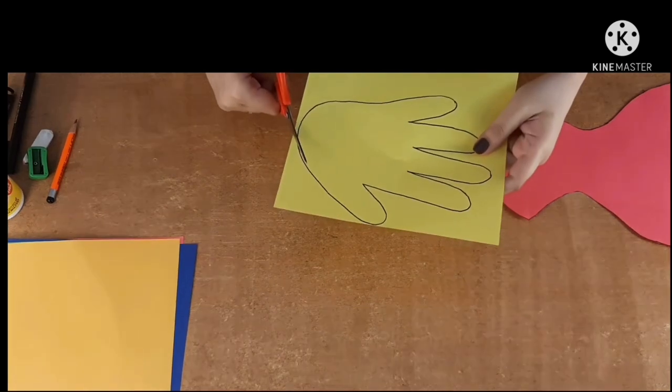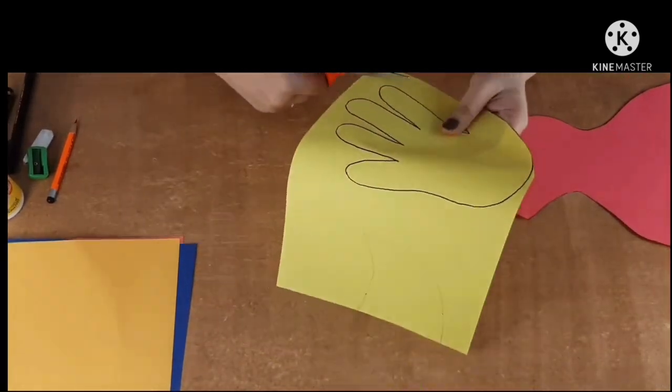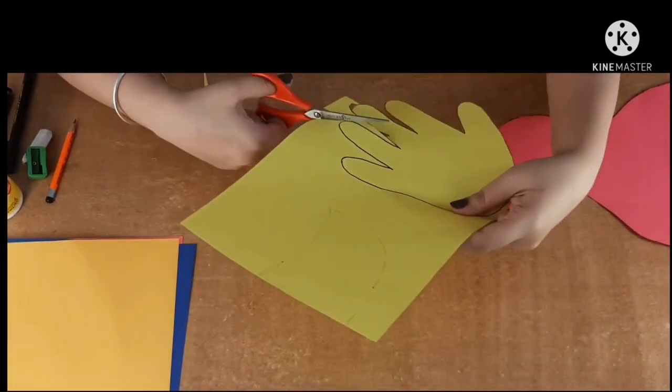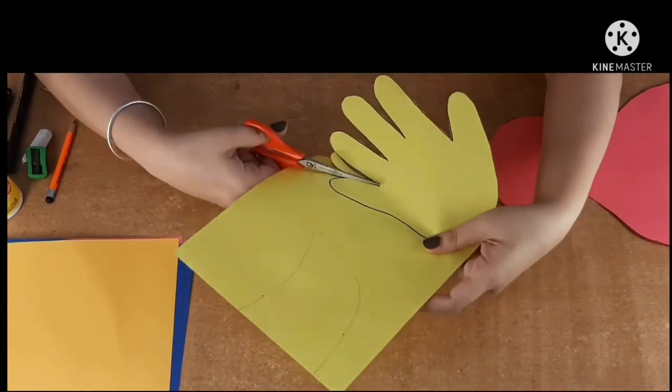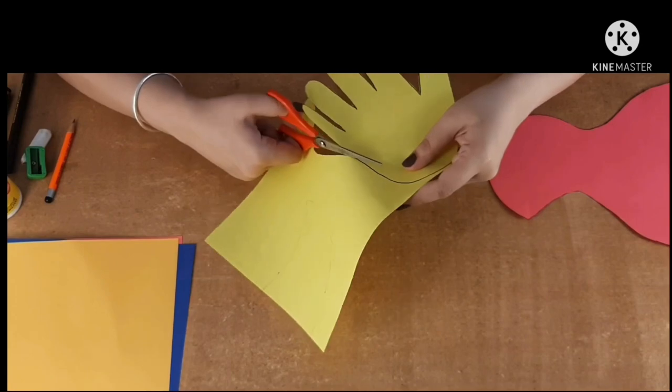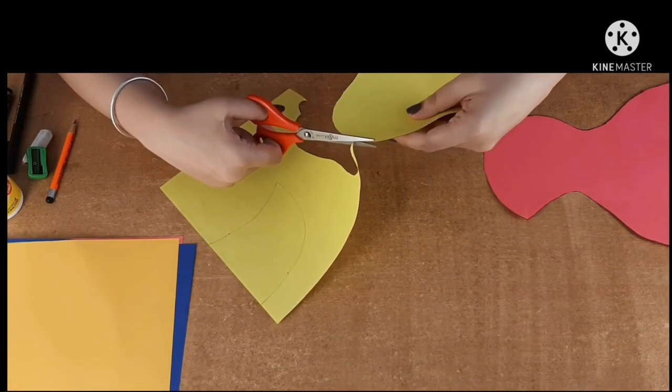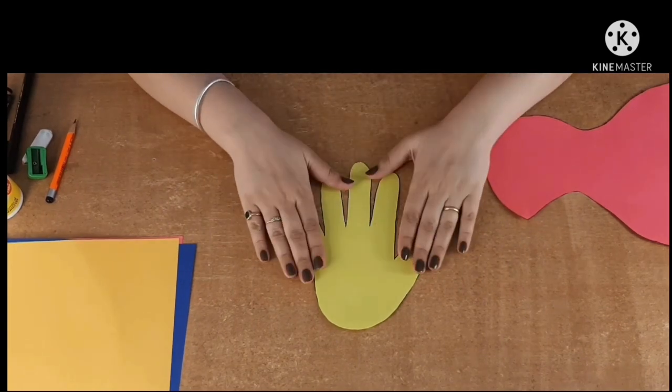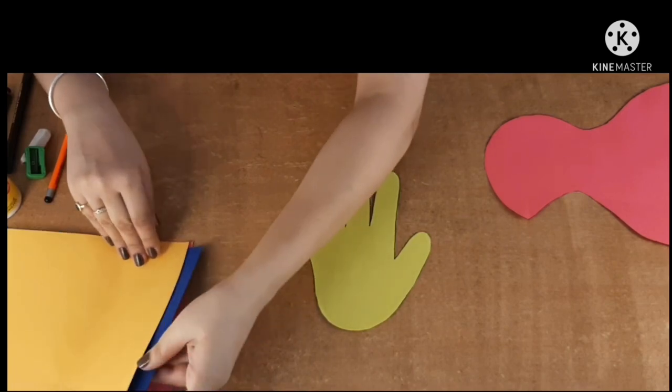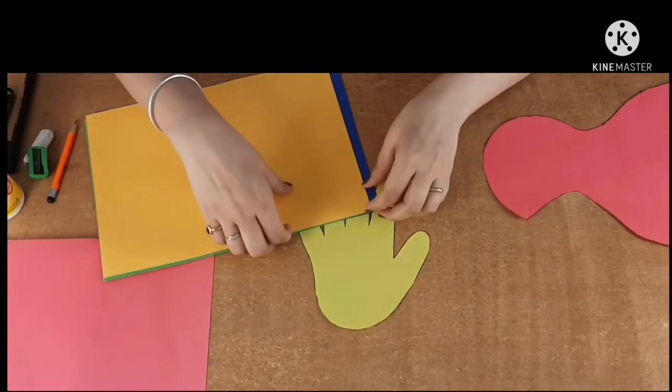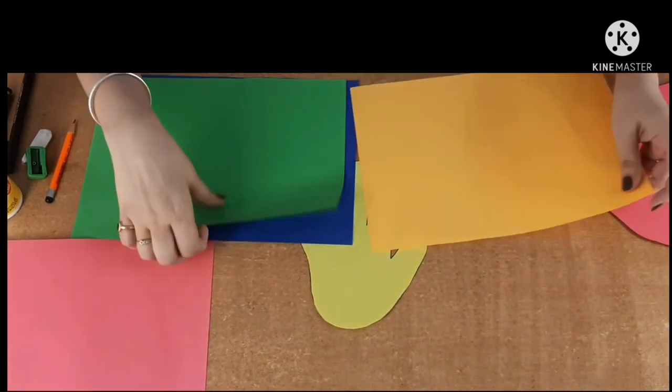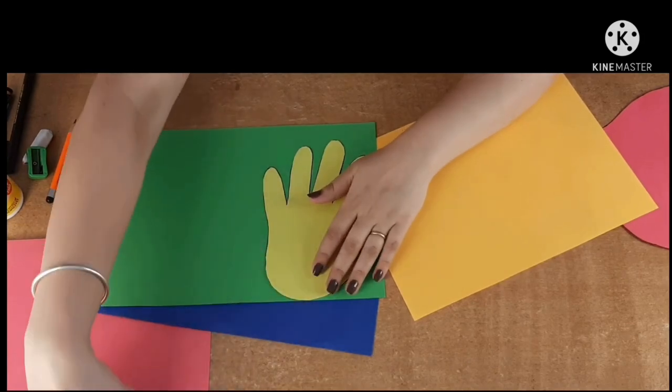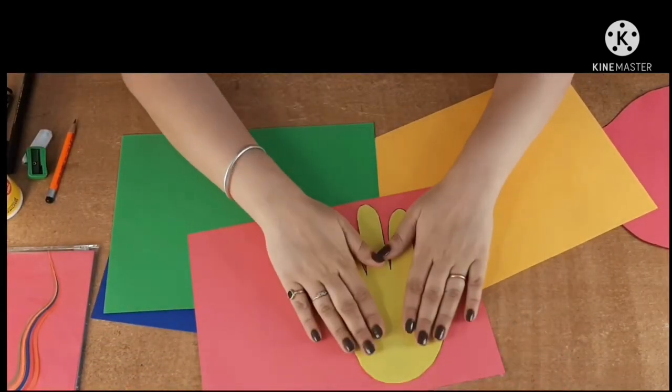And you should always rub it and make it perfect. So it will look like this. Now again you have to cut this. But I am just going to outline it with a sketch pen. Now it looks something like this. Now you have to cut.